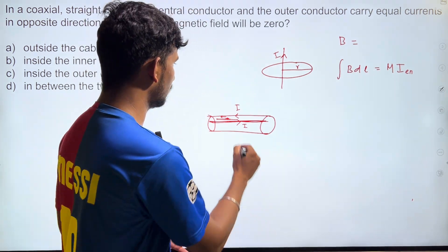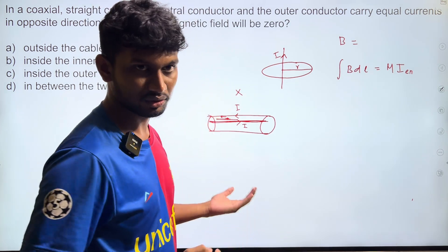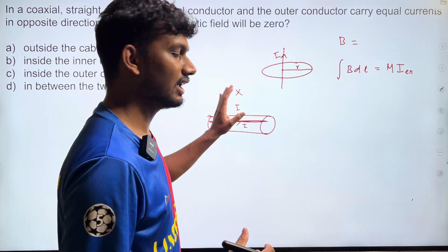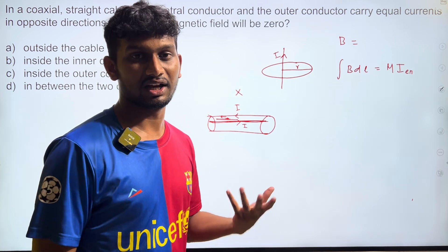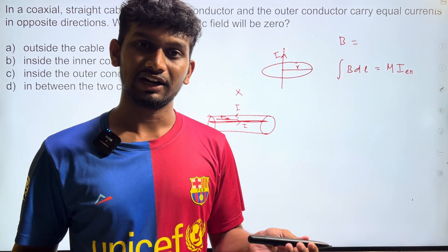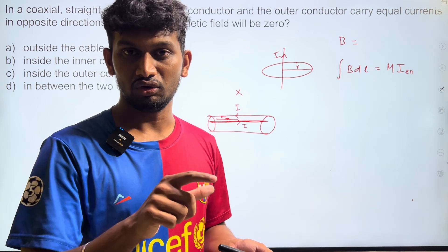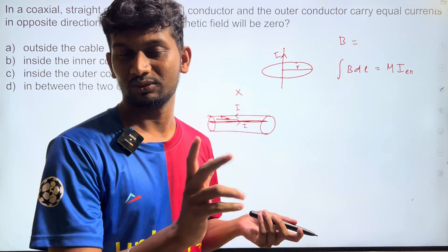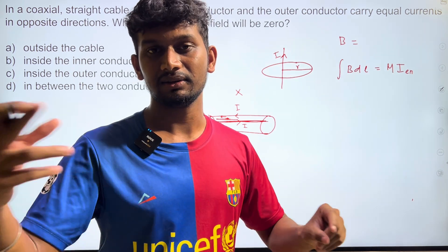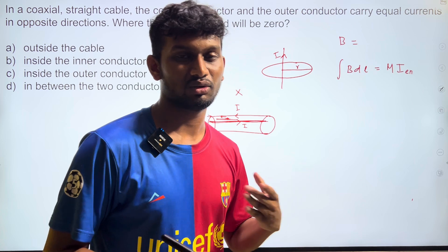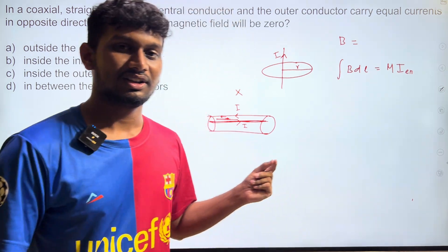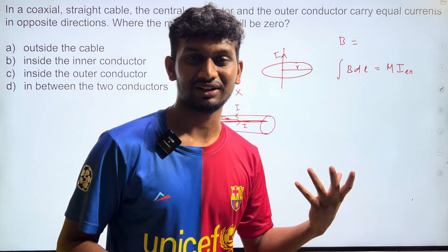Outside the cable entirely, the net i_enclosed is zero because the equal and opposite currents cancel completely. So outside the coaxial cable, the magnetic field is zero. This is the main application: if you normally carry a current wire in your pocket and put a compass near it, the compass deflects. But with a coaxial cable, it won't deflect because the external magnetic field is zero — that is why coaxial cables are used to shield instruments from magnetic interference.